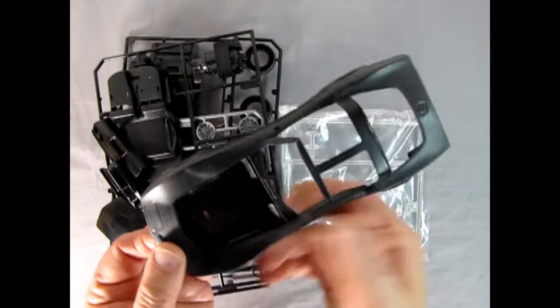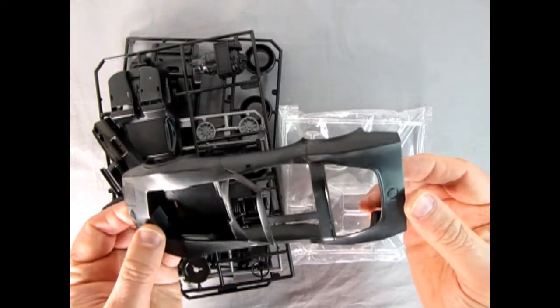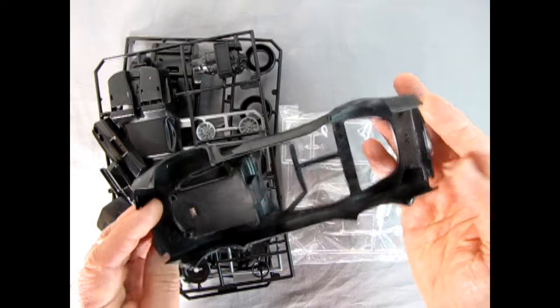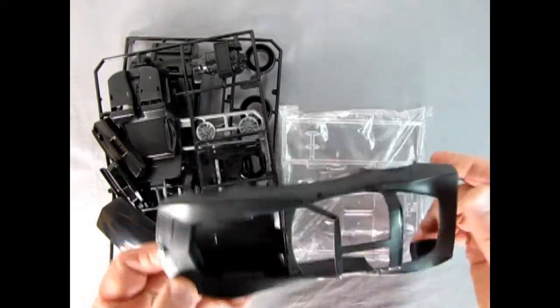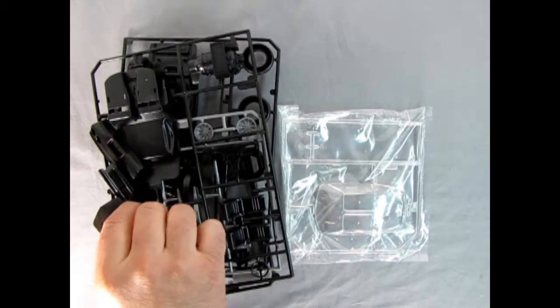Here we have the Corvette body. Now this would be molded in high impact shiny black however I did start to work on this so I just sanded it all down so it does look a little bit rough but we'll get into that in a minute.